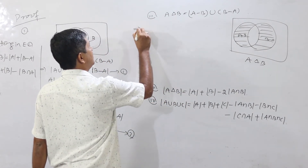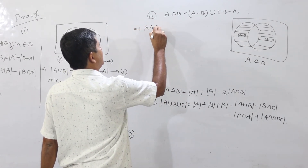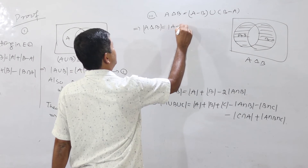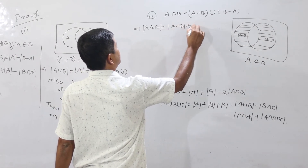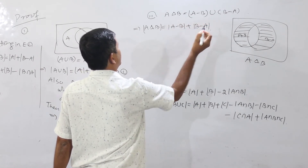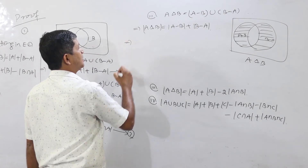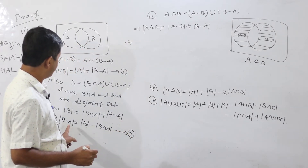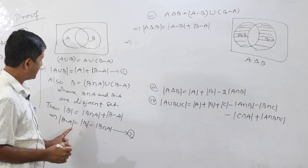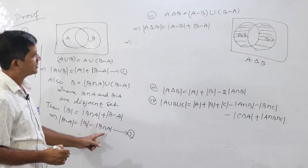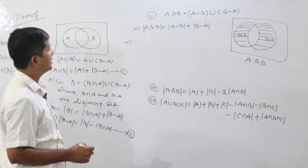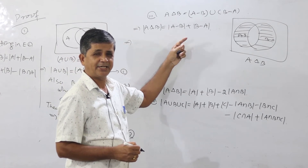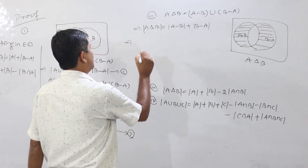So cardinality of A Δ B equals cardinality of A difference B plus cardinality of B difference A. From the previous result, cardinality of B difference A equals cardinality of B minus cardinality of B intersection A, and cardinality of A difference B equals cardinality of A minus cardinality of A intersection B.